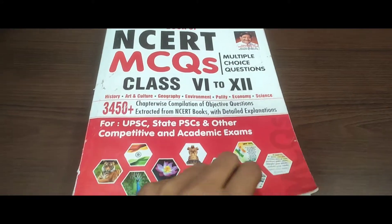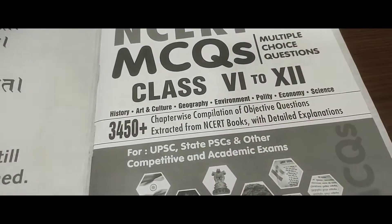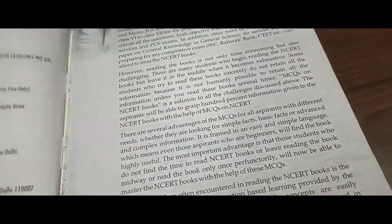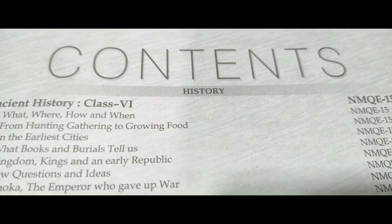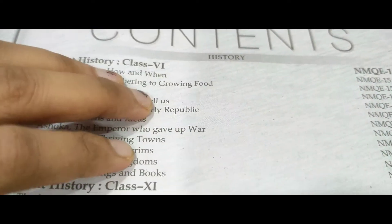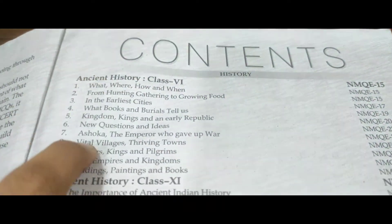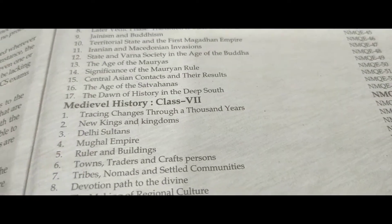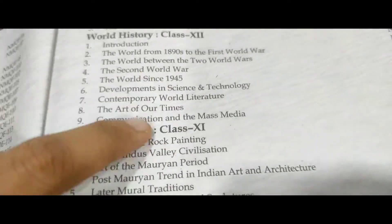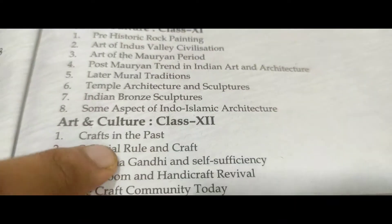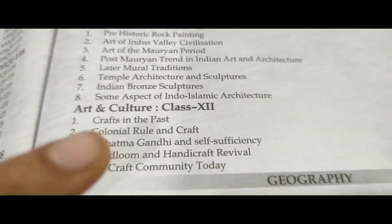Let's dig into this book. If you open the first book, you get an introduction about the book, the author, prices, and all that. The history section of this book is divided into four parts: ancient history, medieval history, modern history, and world history. The art and culture section covers just class 11 and 12, as this is what is important and relevant for UPSC.